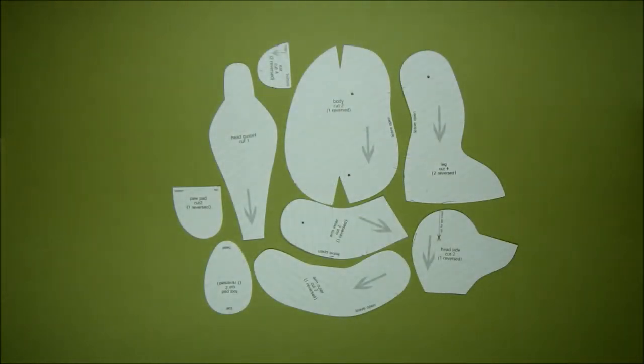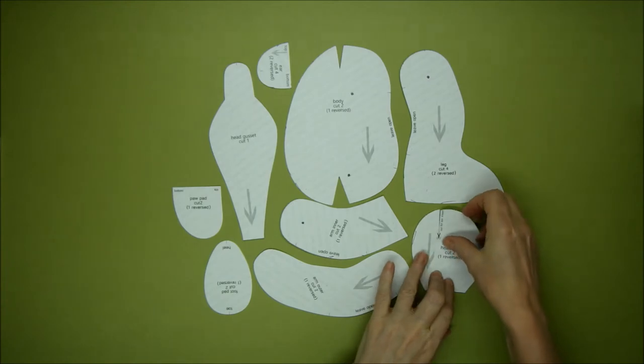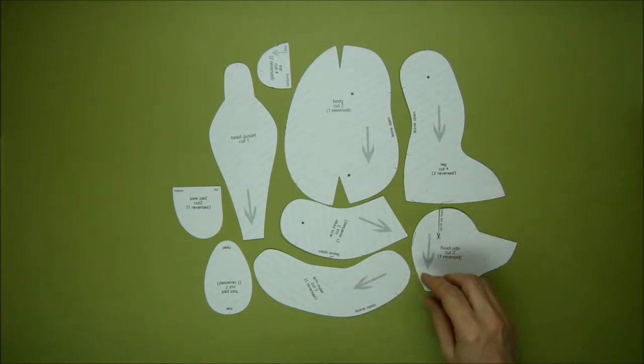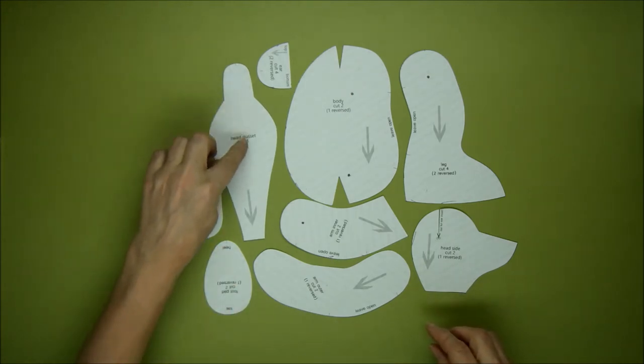We've cut out all of our pattern pieces and glued them onto the card. We have the head with the slit in the side into which we insert the ears. We have the head gusset, one of those.